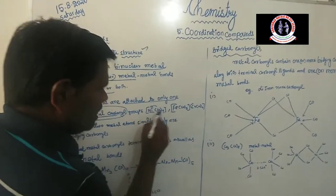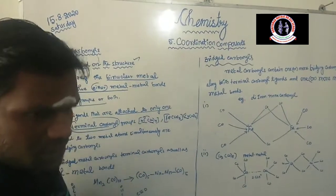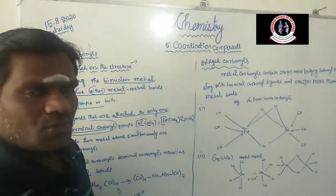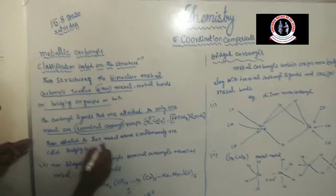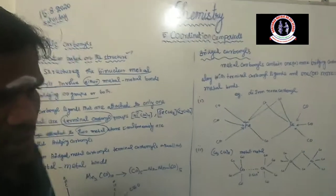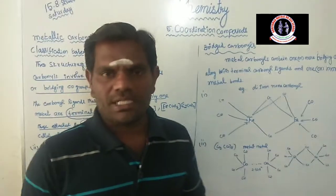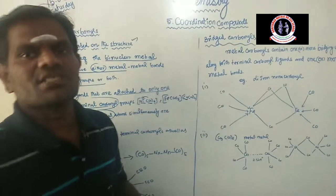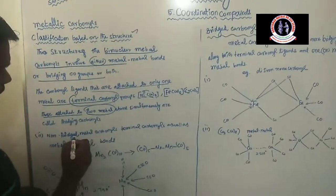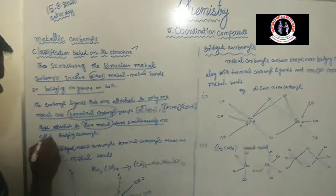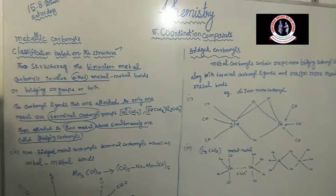Tetracarbonyl nickel, pentacarbonyl iron, and hexacarbonyl chromium — these three complexes are each attached with only one type of metal atom. Another type is when the carbonyl is attached to two metal atoms simultaneously. When two or more metal atoms are attached with the same carbonyl group, it is called a bridging carbonyl.